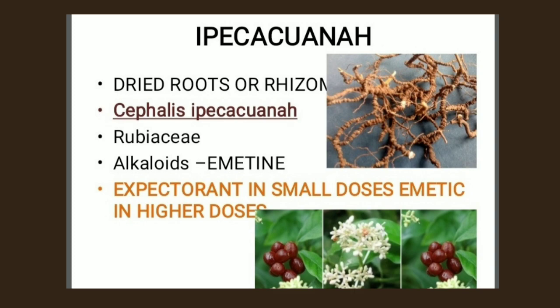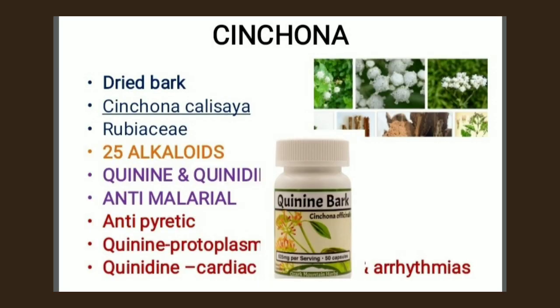The next one is cinchona. Cinchona is the dried bark of cultivated trees of Cinchona officinalis. It is an organized drug because it is the dried bark of cultivated trees. Its family is Rubiaceae. It contains 25 alkaloids which belong to the quinoline group, namely quinine and quinidine. Cinchona bark is antimalarial in nature and also used as a bitter stomachic and antipyretic.